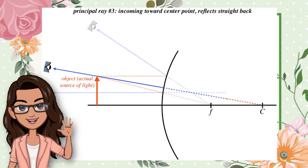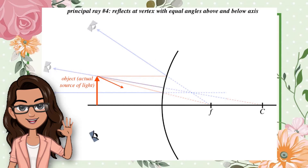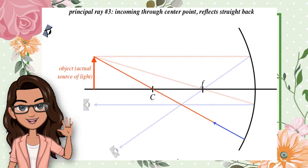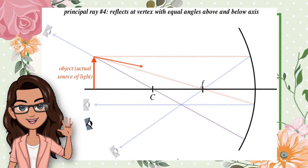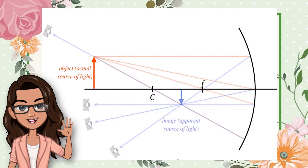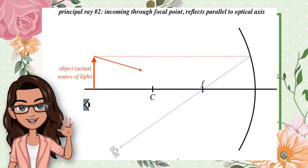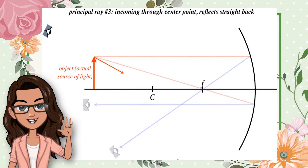For a concave mirror, incident light rays parallel to the principal axis bend towards the focus of the mirror as it reflects, thus producing a small, laterally reversed and upside down or inverted image. The image is inverted because the point of intersection of the real reflected light rays is below the principal axis.